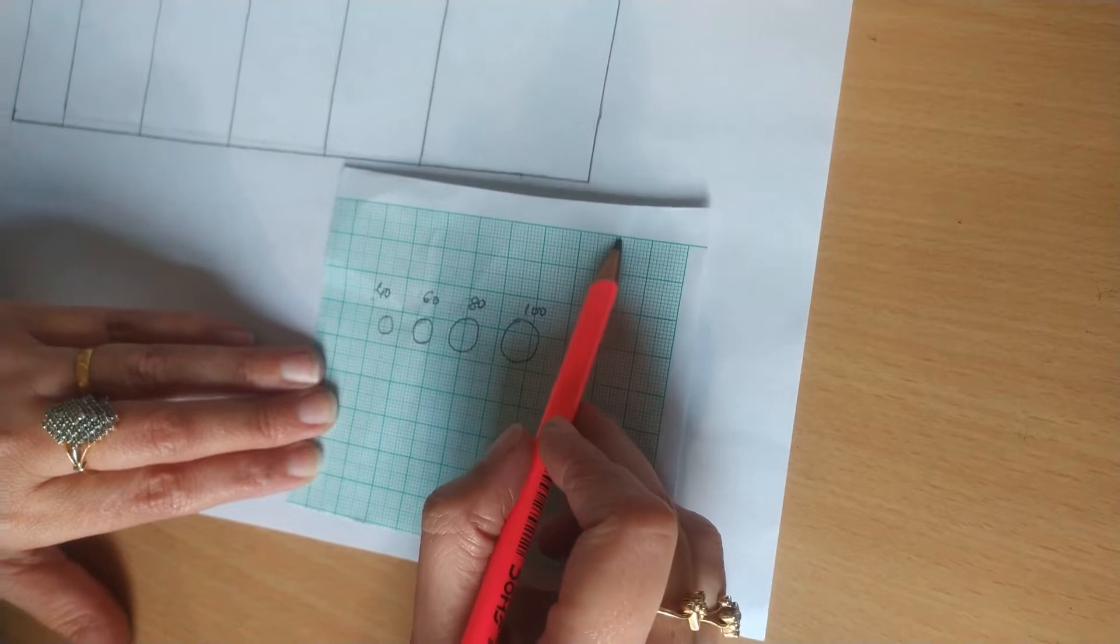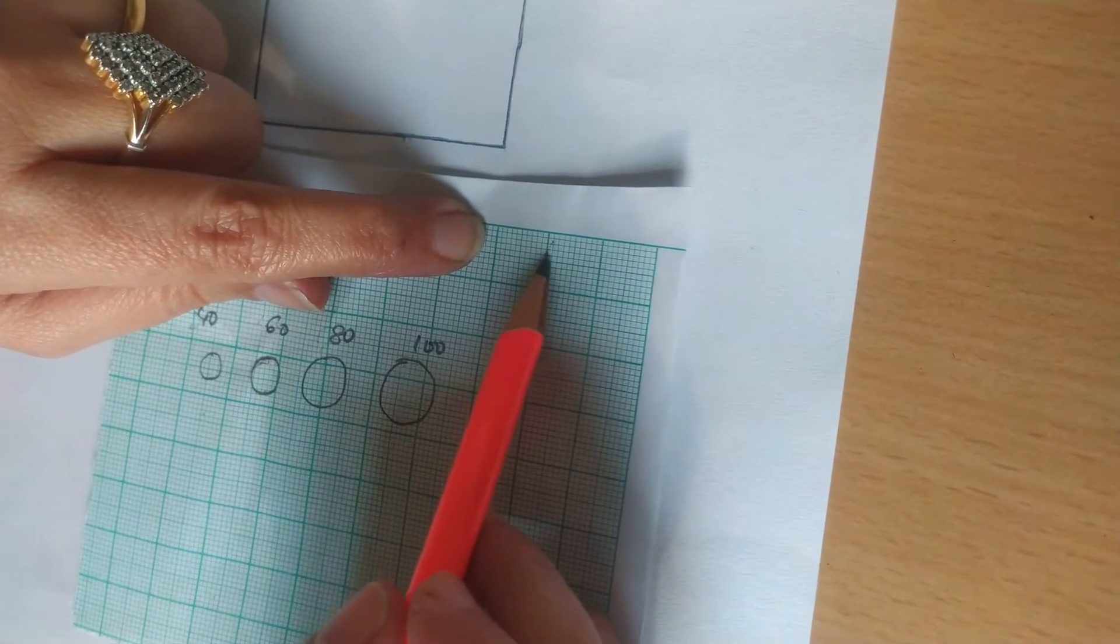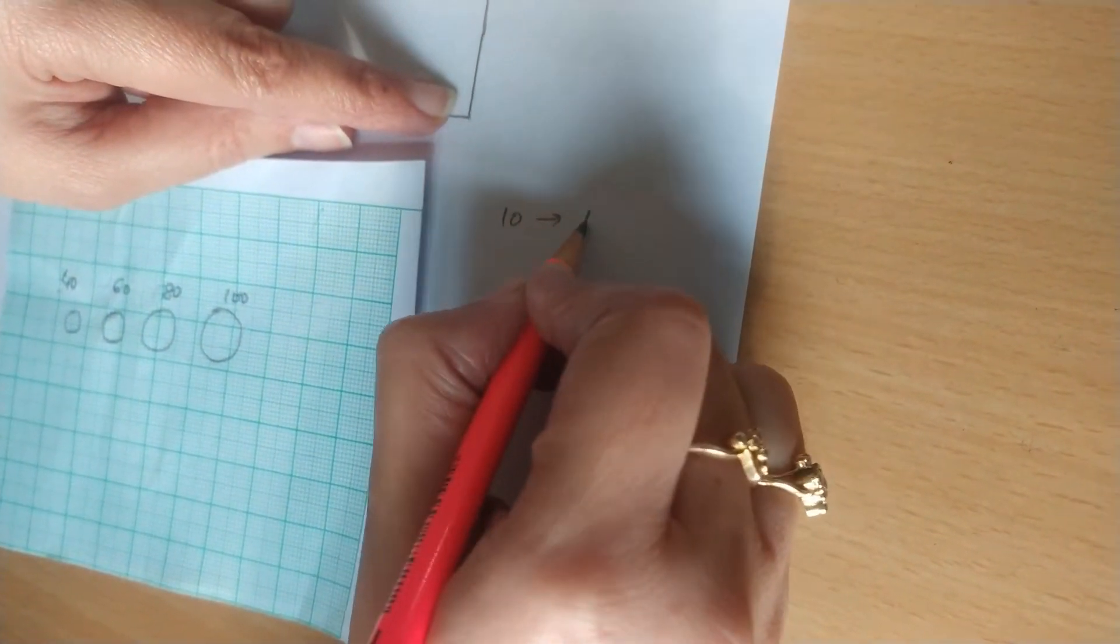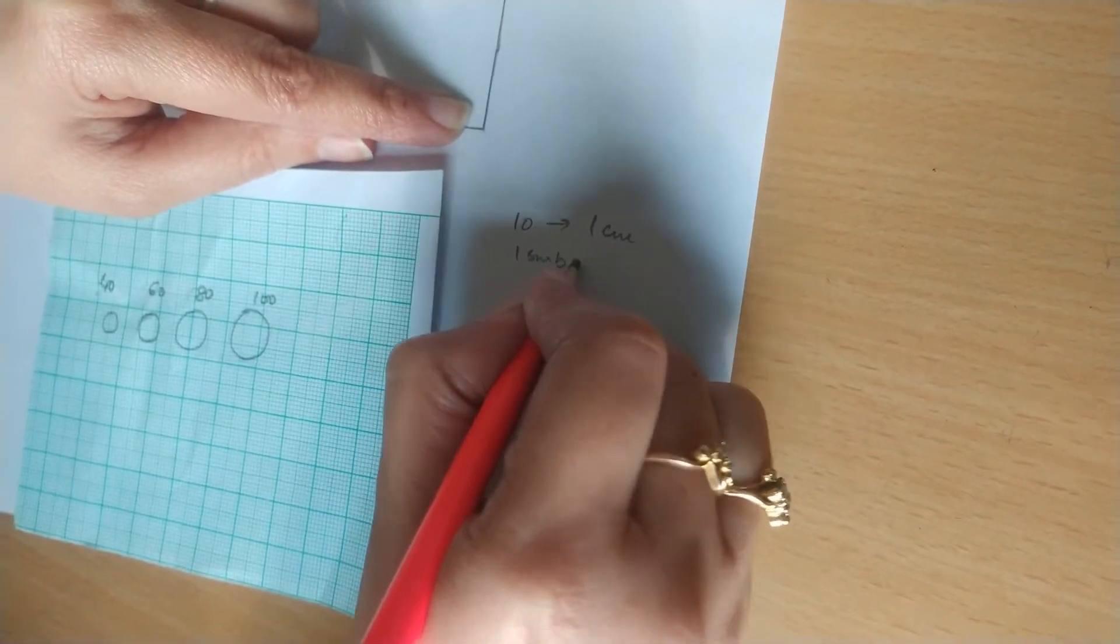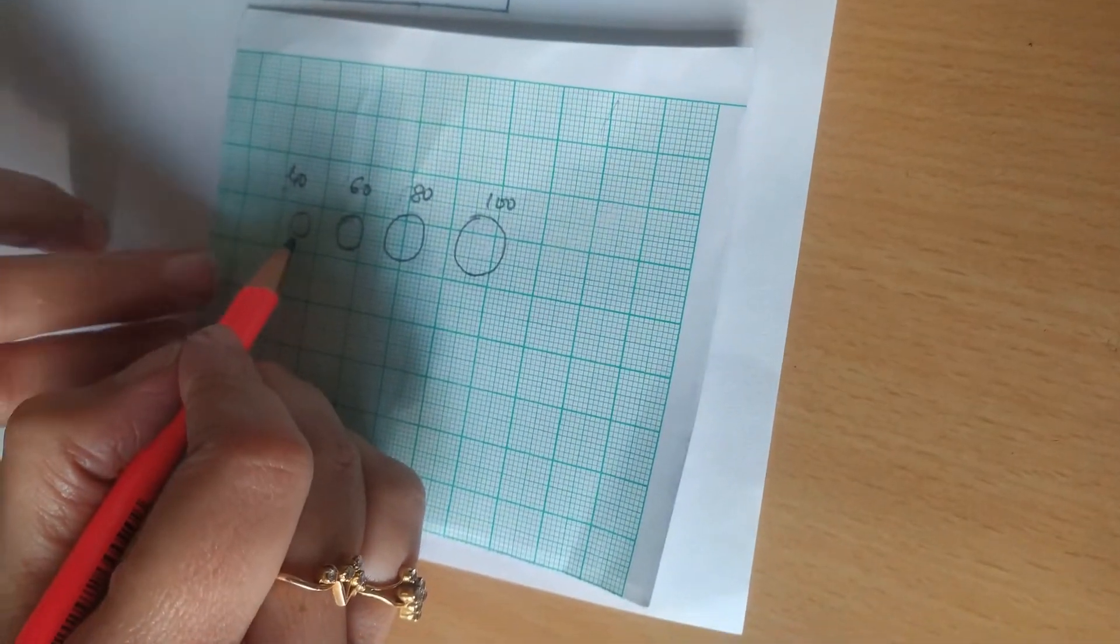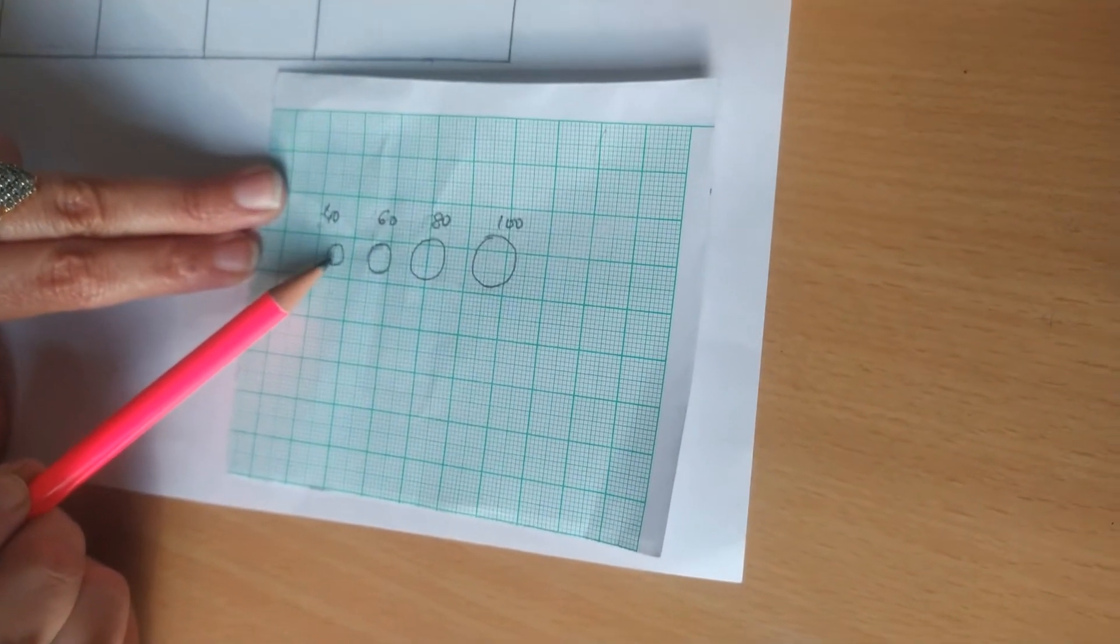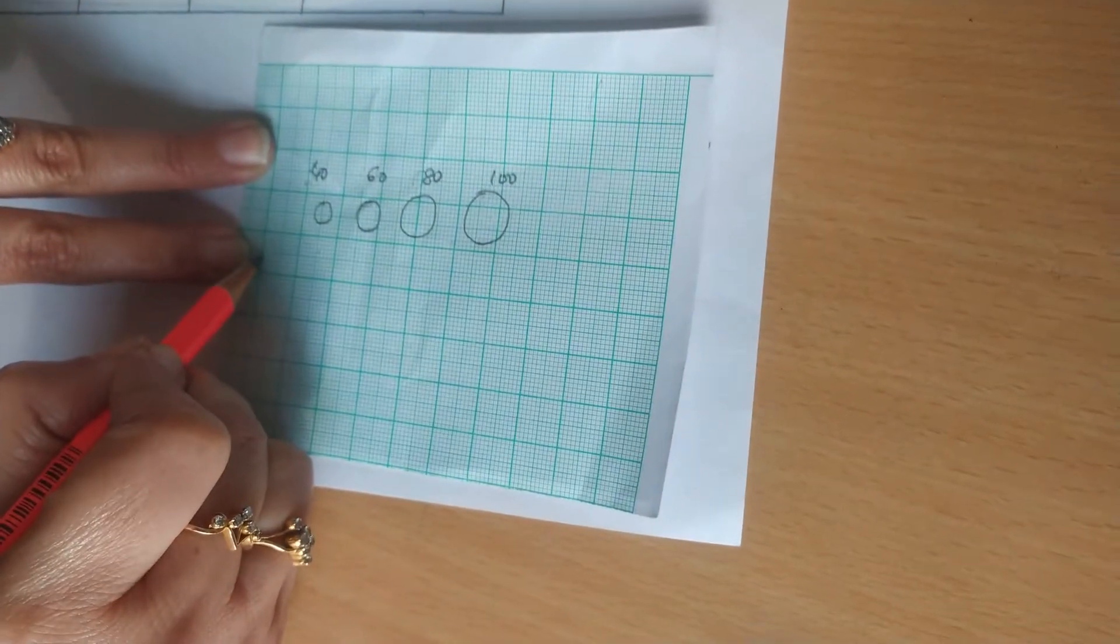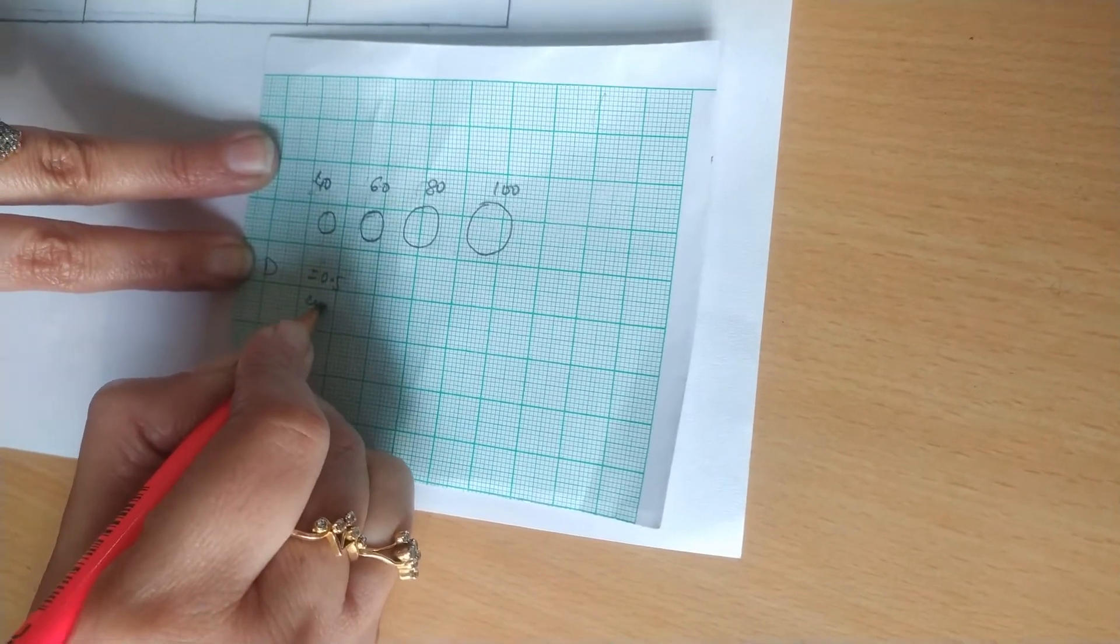This big box is 1 cm and has 10 boxes. So if 10 boxes equals 1 cm, then one small box has dimension of 0.1 cm. At 40 cm we can see it has 1, 2, 3, 4, 5 boxes. So the diameter comes out to be 0.5 cm.